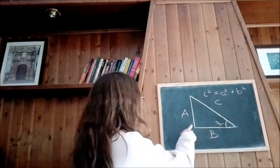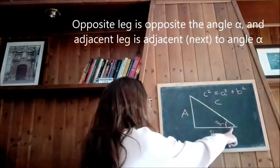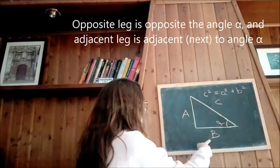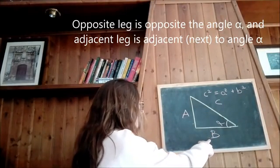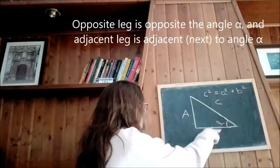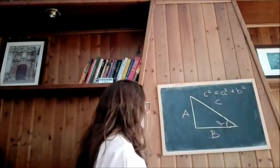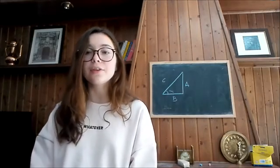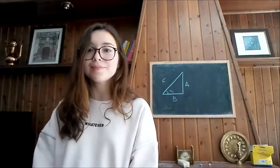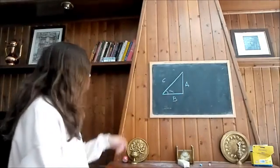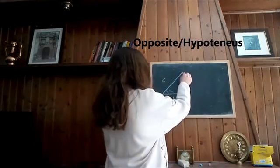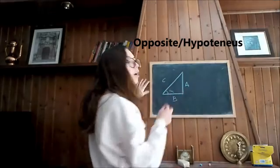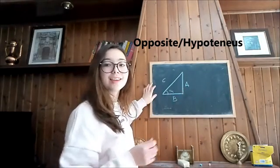The opposite length is opposite to the angle alpha and the adjacent length is adjacent to the alpha angle. We are going to calculate the sine, the cosine, and the tangent of alpha. To calculate the sine of alpha, we have to divide the opposite by the hypotenuse.